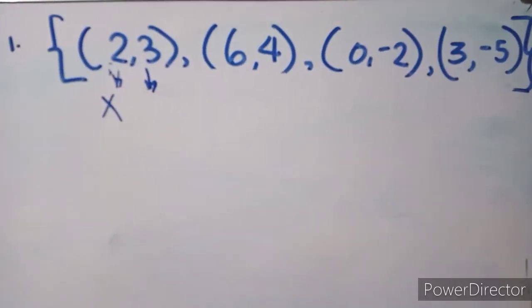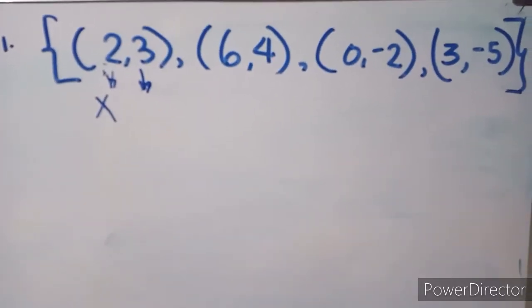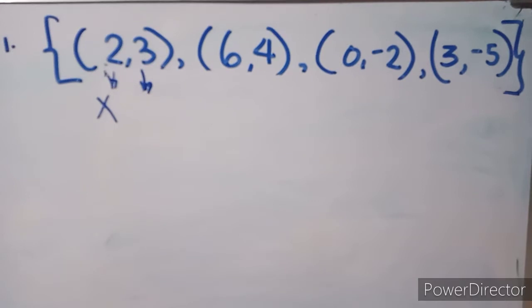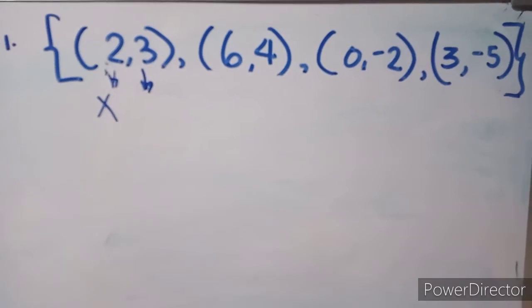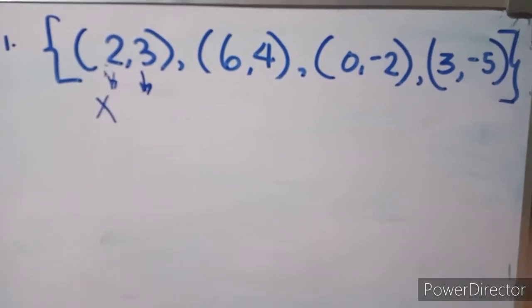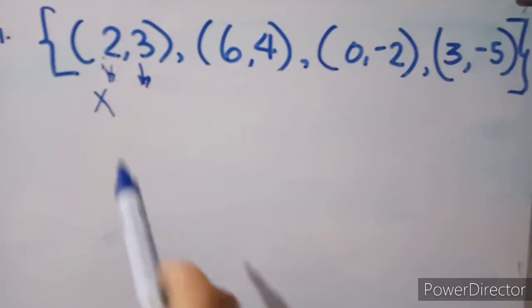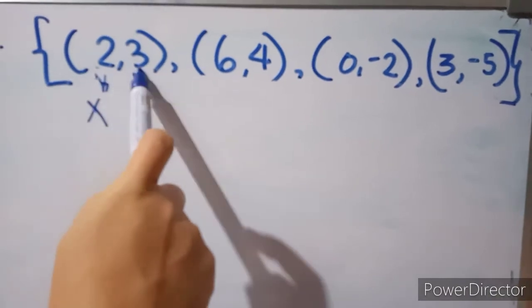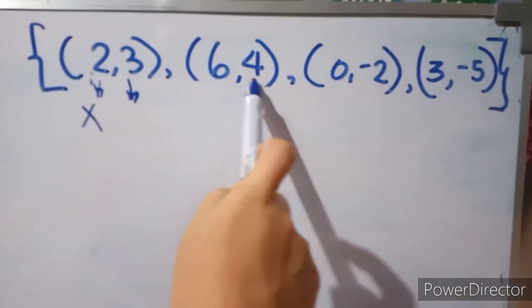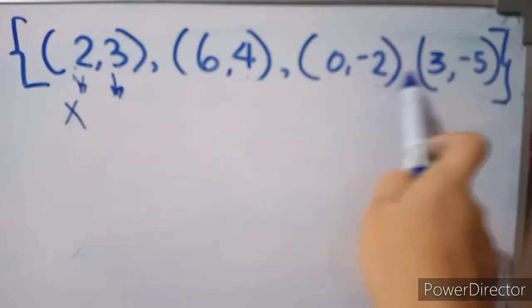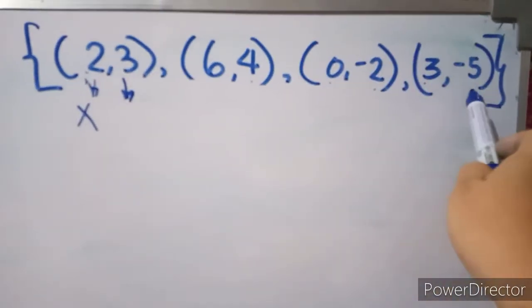So if you are given a set of ordered pairs, and you are going to identify if it is a function or not a function. Suppose we have (2, 3), (6, 4), (0, -2), and (3, -5).